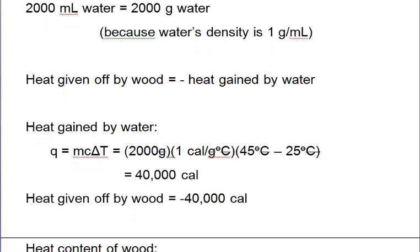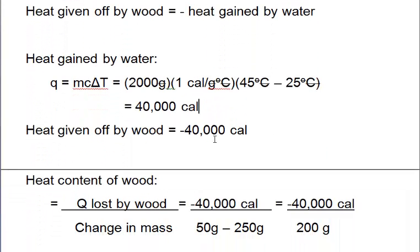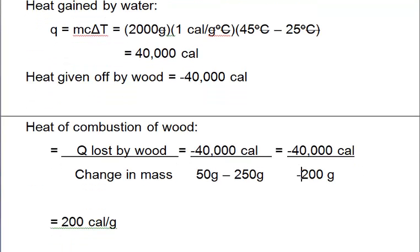Now we're ready to find our heat of combustion, or our heat content. Let's use the correct word here, heat of combustion, because that's what we're doing. We are combusting that wood. Remember that it's going to be the heat lost by the wood divided by how much the wood's mass changed, how much it would actually burn. So we'll do that negative 40,000 calories that it gave off, and divided by its final mass, which was 50 grams, subtracted from its initial mass, which was 250 grams. So that's basically 40,000 divided by negative 200, which turns out to be 200 calories per gram.